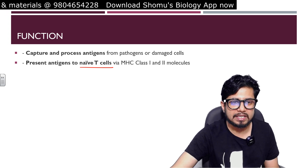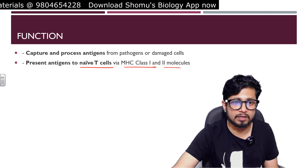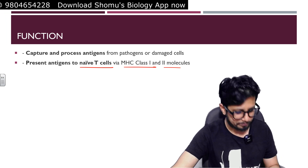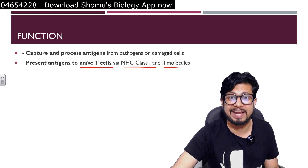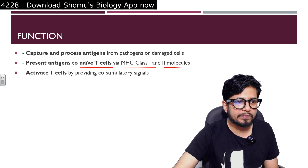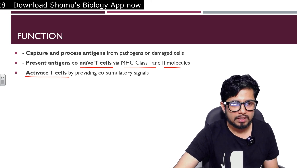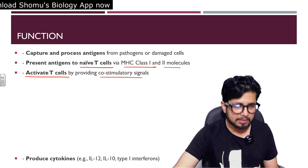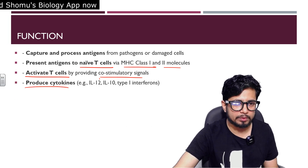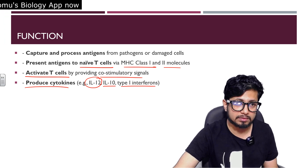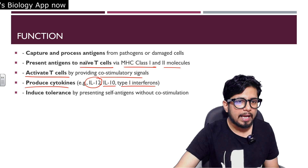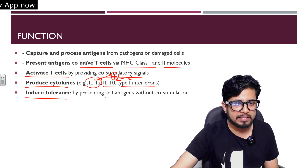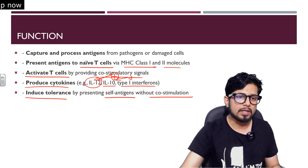The functions of dendritic cells include: capturing and processing antigens and presenting them to other immune system cells to elicit an immune response; presenting antigen to naive T cells via MHC class 1 and class 2 molecules, converting naive T cells into either CD4+ helper T cells or cytotoxic CD8+ T cells; activating T cells by providing co-stimulatory signals; and producing cytokines like interleukin-12, interleukin-10, and type 1 interferons.